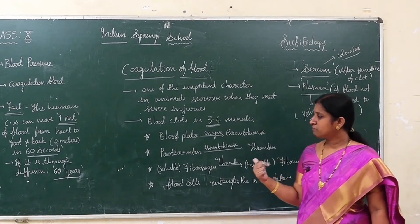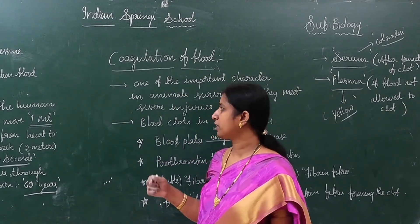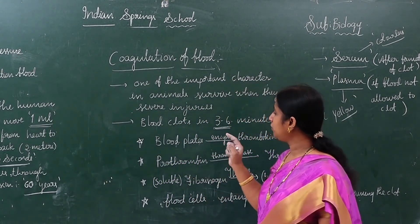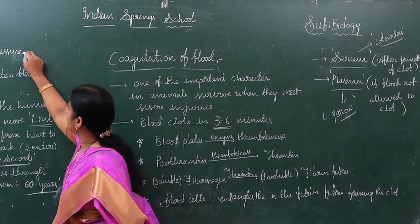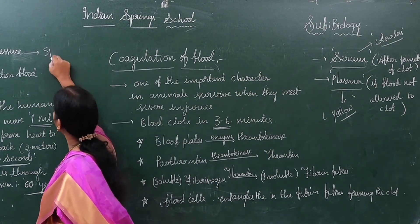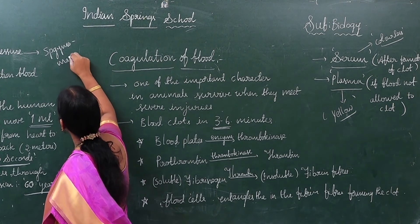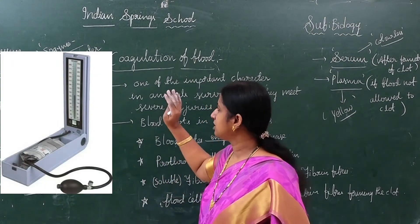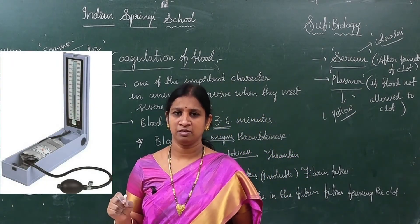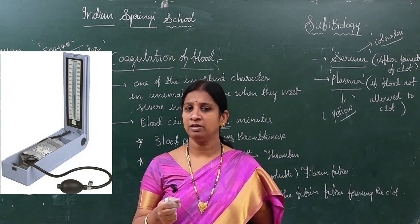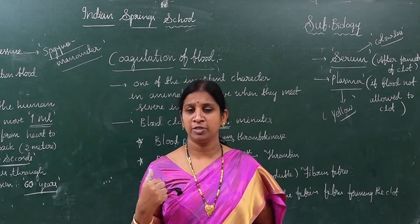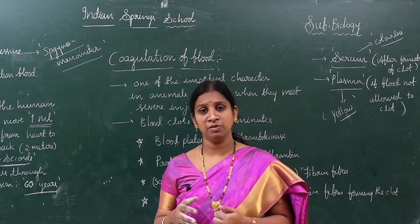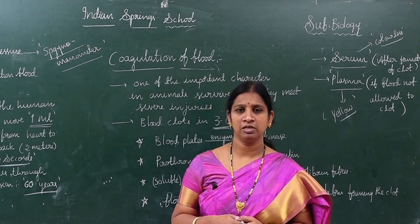We have now concluded the concept of transportation in animals. One important point: how can we measure blood pressure? The device is called a sphygmomanometer — not just a 'BP machine.' With the help of a sphygmomanometer, we can measure blood pressure. Try to answer these questions: What is blood pressure? What is normal blood pressure? Which device is used to measure BP? How does coagulation occur and how much time does it take? Prepare well. Thank you.